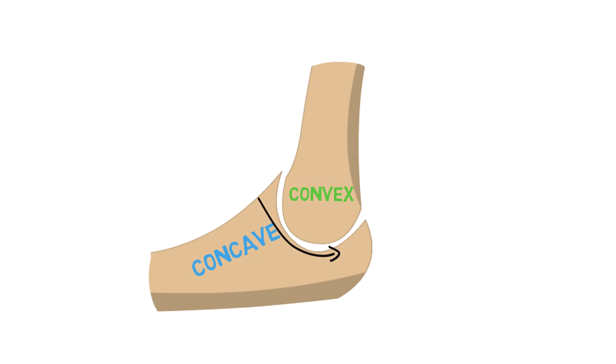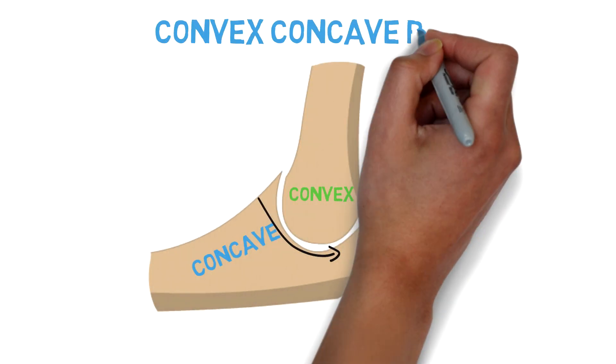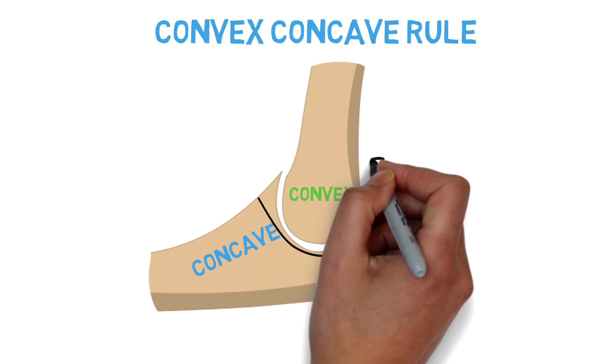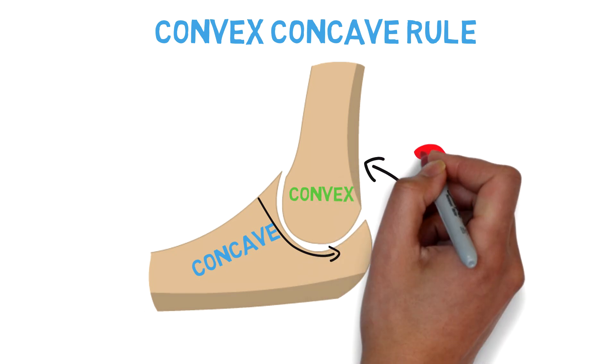Now let's get into the rule itself. The convex concave rule depends on which surface is moving.